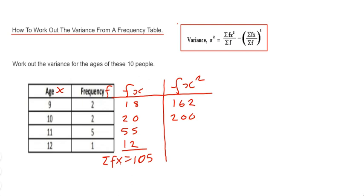Our next one would be 11 squared which is 121, then times that by 5, that gives us 605. And the final one would be 12 squared times 1 which is 144.